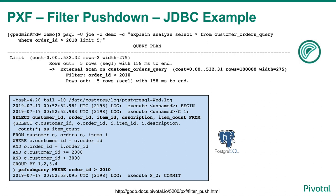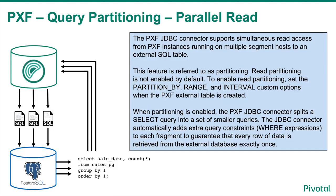The Postgres log file shows that when the query was passed in for processing, the filter criteria on order ID was pushed down to the database, allowing the filter operation to happen within Postgres instead of within Greenplum. The PXF JDBC connector supports simultaneous read access from PXF instances running on multiple segment hosts to an external SQL table. This feature is referred to as partitioning. Read partitioning is not enabled by default. To enable read partitioning, set the partition by, range, and interval custom options when the PXF external table is created. When partitioning is enabled, the PXF JDBC connector splits a SELECT query into a set of smaller queries, each called a fragment. The JDBC connector automatically adds extra WHERE expressions to each fragment to guarantee that every row of data is retrieved from the external database exactly once.